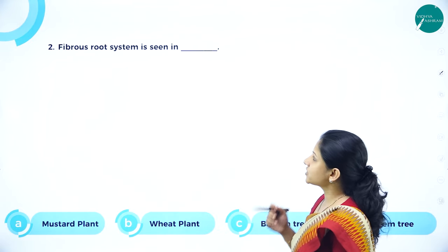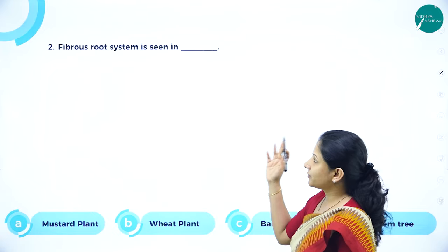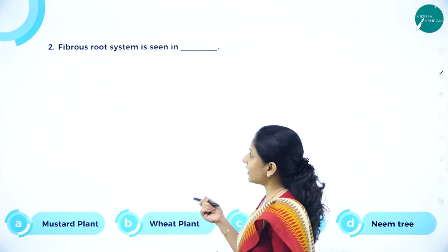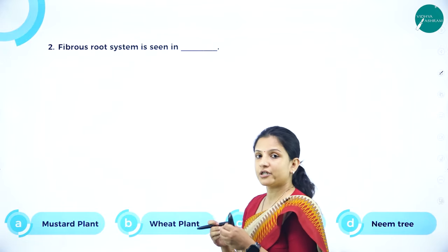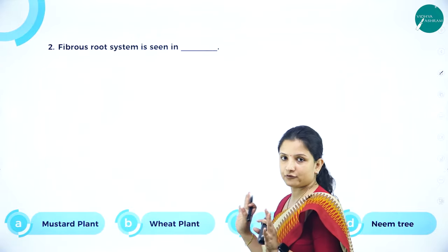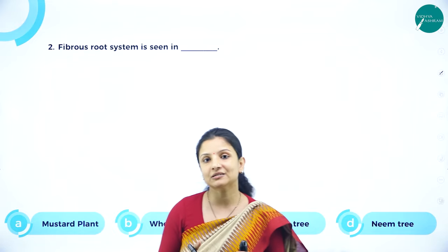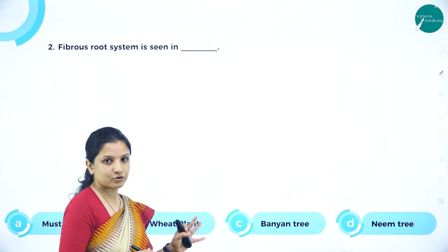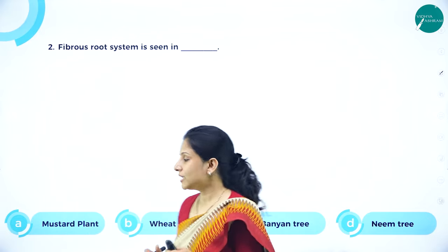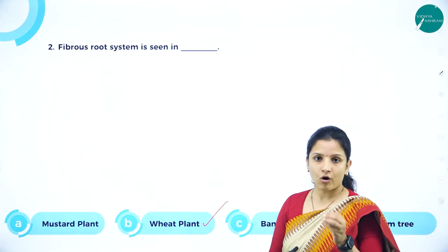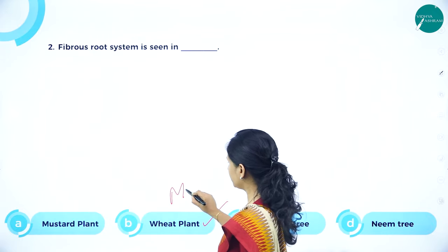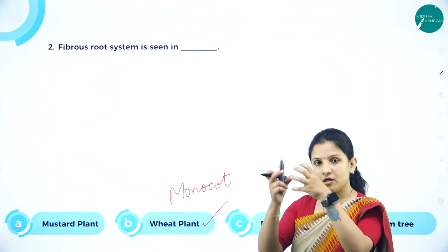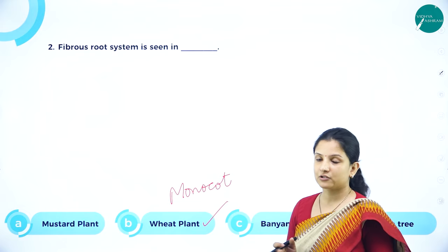Next MCQ: Fibrous root system is seen in — mustard plant, banyan tree, neem tree, or wheat plant? Mustard is a dicotyledonous plant, so that is not correct. Banyan trees are also dicots and bear prop or adventitious roots. Neem tree is also a dicot. The right answer is wheat plant — it is a monocotyledonous plant that has fibrous root system, where the primary root is lost and fine roots develop directly from the stem.